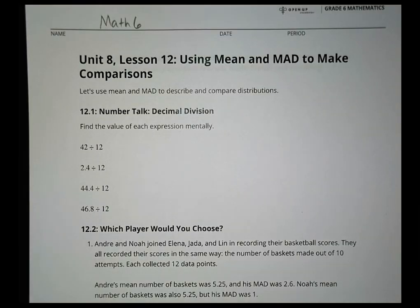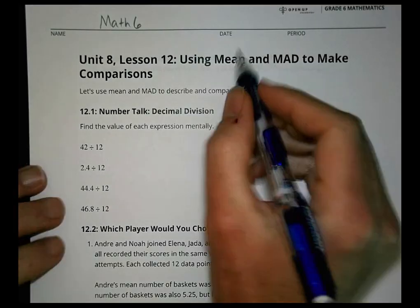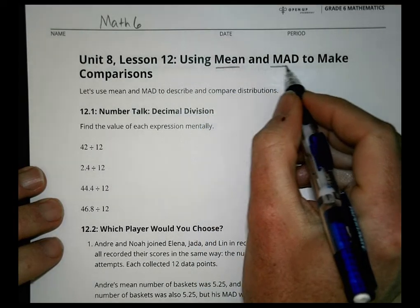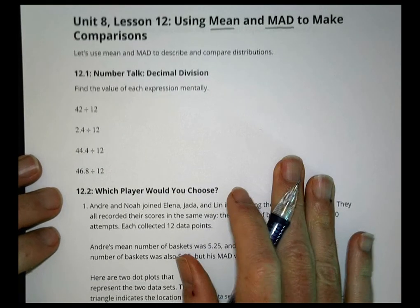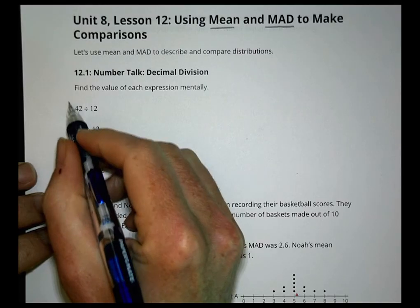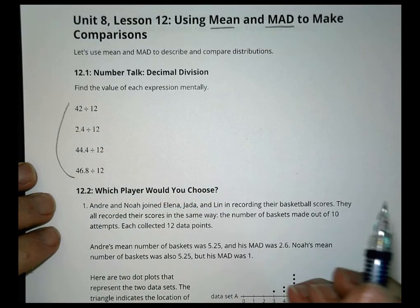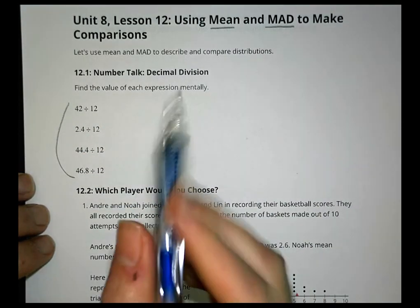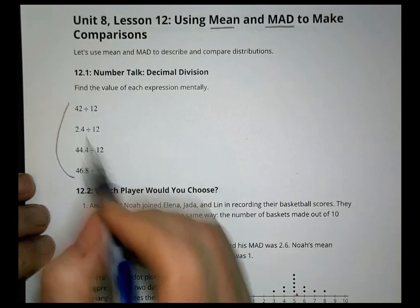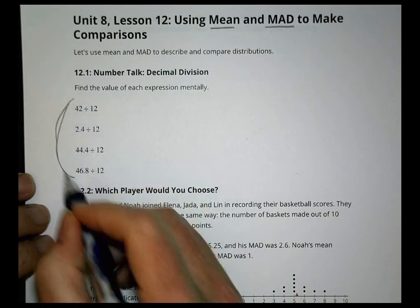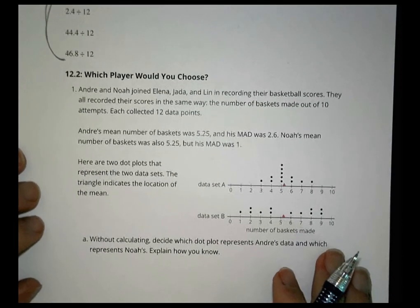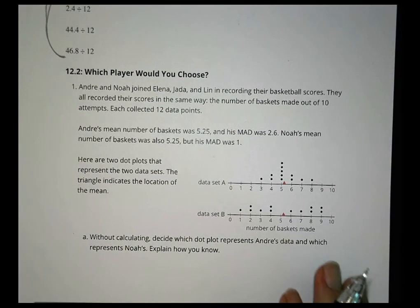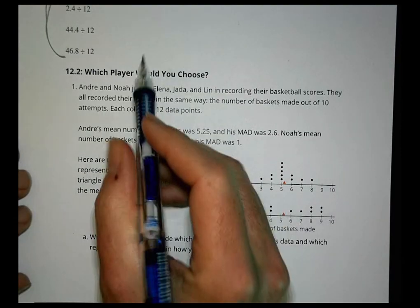Hey, this is Math 6, Unit 8, Lesson 12: using mean and the mean absolute deviation to make comparisons. First we have a little number talk on decimal division, some ways to think about how you might divide things using mental math. I'm going to skip that and move on because we're running out of time to get these lessons done.